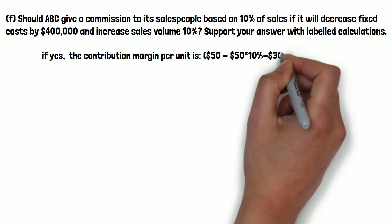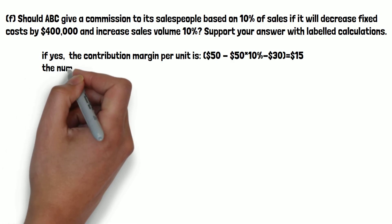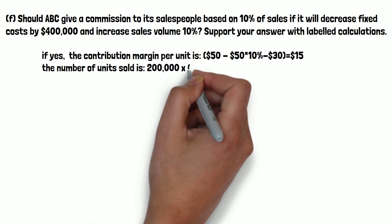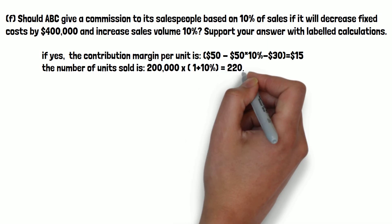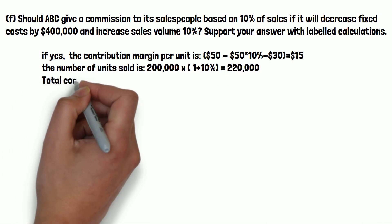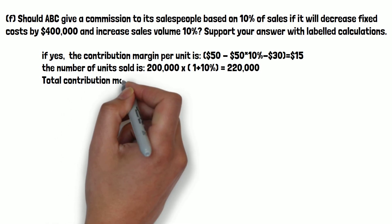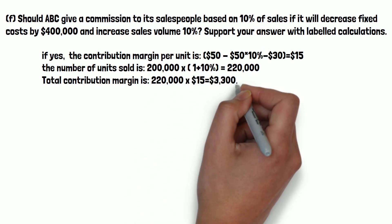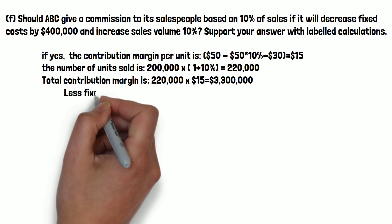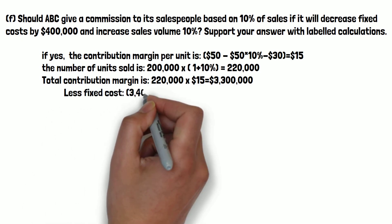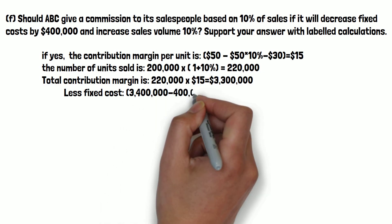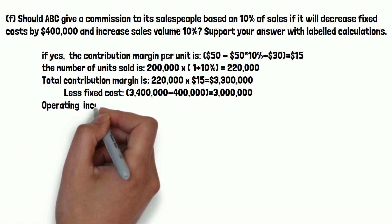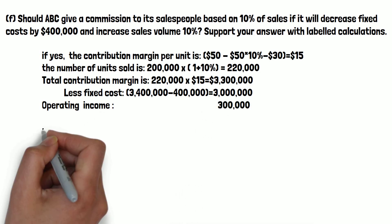If we accept this proposal, the contribution margin per unit is reduced because we pay the salesperson's commission: $50 selling price minus 10 percent commission ($5) minus variable cost of $30, giving $15 per unit. Units sold increase by 10 percent: 200,000 times 1.10 equals 220,000 units. Total contribution margin is 220,000 times $15 equals $3.3 million. Fixed costs are reduced by $400,000, from $3.4 million to $3 million. Operating income under the proposal is $300,000.